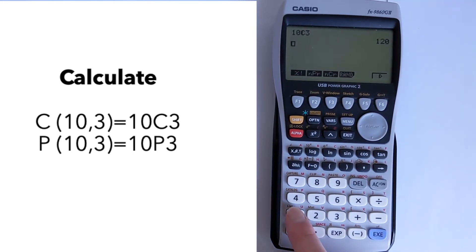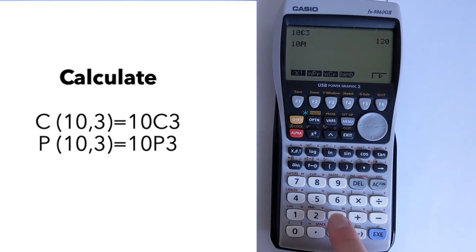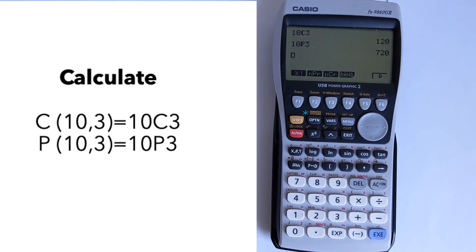If you want to do a permutation you do exactly the same thing. Put in your n value, then press permutation, put in your r value, and then press execute and that will do the calculation for you.